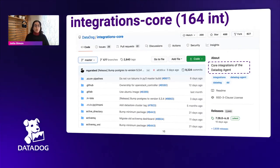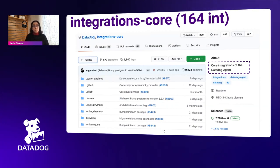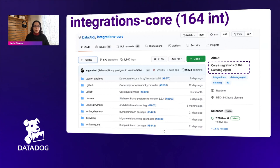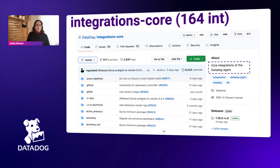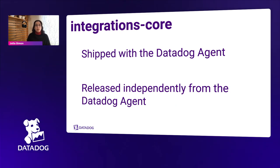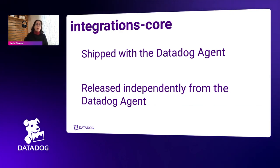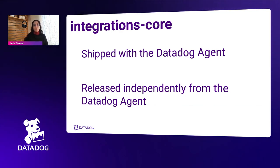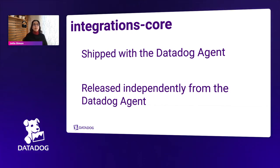We manage two main repos. The first is integrations core — the integrations we build internally at Datadog, which come included in the agent. We have 164 integrations and growing. These are shipped with the Datadog agent but also released independently from the agent. The reason we do this is so you can update integrations individually without having to wait for a full agent release — so if we release a bugfix or new feature in an existing integration, you can update that immediately.